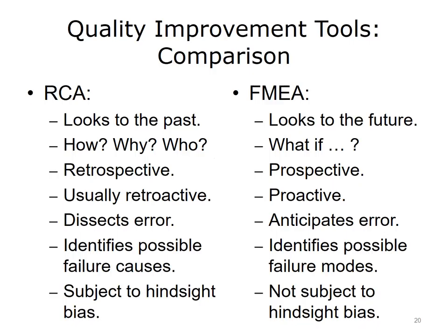Both RCA and FMEA are powerful quality improvement tools that can assist teams in understanding errors and implementing improvement actions. RCA looks to past errors for answers, while FMEA anticipates error. RCA asks the questions how, why, and who; FMEA asks 'what if?' RCA is predominantly a retrospective dissecting of events that have occurred, while FMEA is a prospective, proactive anticipation of errors that could occur in the future. RCA looks for causes and contributors; FMEA looks for possible failure modes. While RCA is subject to hindsight bias, this is not the case with FMEA.